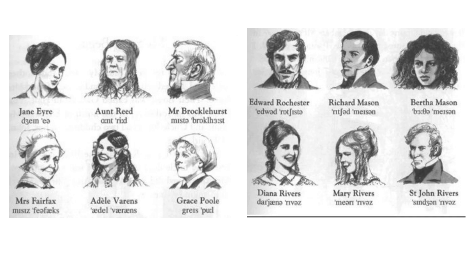2. Aunt Reed — Mrs. Reed — Jane's cruel aunt who raises her at Gateshead Hall. She resents Jane because her husband loved Jane more than his own children.